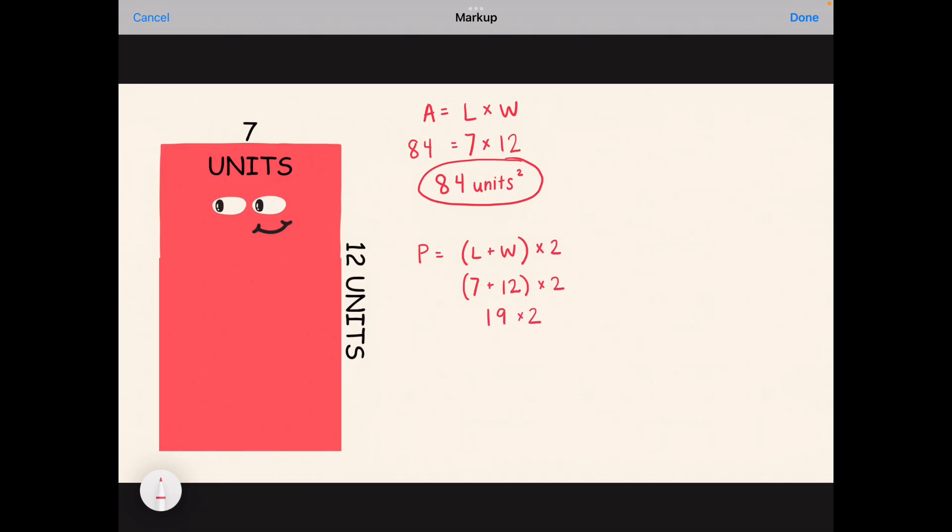And then I can just times that by 2 or double it off to the side, and I get my perimeter of 38. And again, because we're talking about perimeter this time, I do not have to square my final answer.